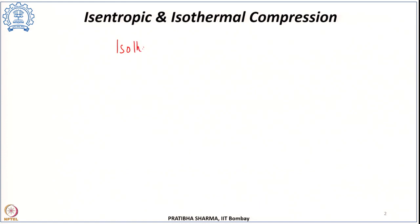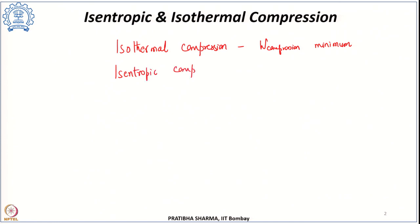We can consider the process to be either an isentropic compression or an isothermal compression. If the process of compression is considered to be an isothermal compression, the work of compression required is minimum — we know this from thermodynamics. If the process of compression is modelled as an isentropic process, then the compression work is maximum.